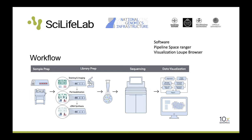The workflow in short: we section with a cryostat, keeping the sample cold at all times to preserve RNA. We place one section per capture area, fix the tissue in cold methanol, stain it, and take bright-field images at 20x magnification. Then we proceed with permeabilization, cDNA synthesis on top of the array, template switching, and collect single-stranded DNA into individual tubes. We do cDNA amplification, library construction, and sequencing. Data analysis will be covered by Ludvig and Remy.